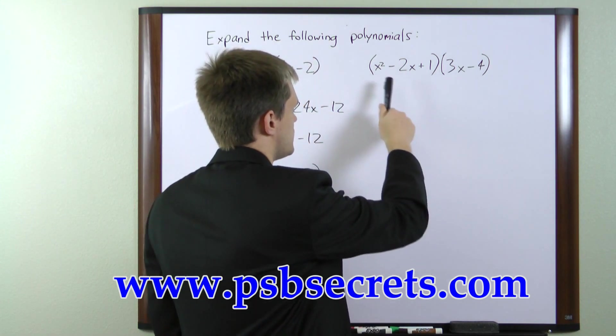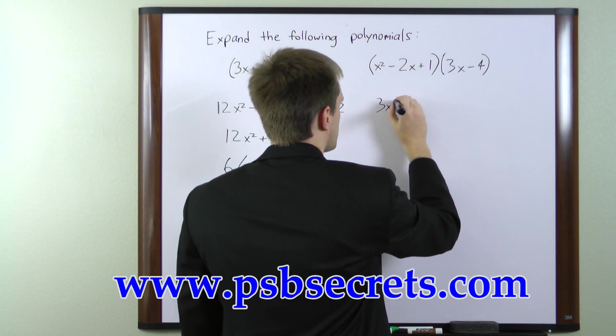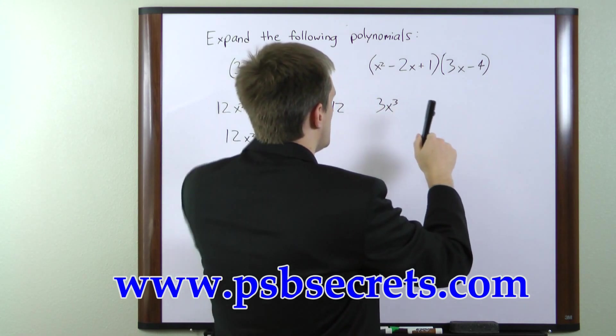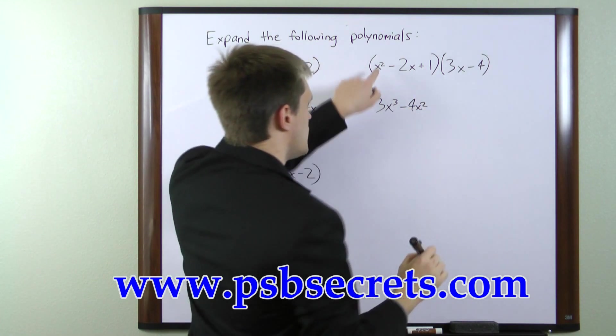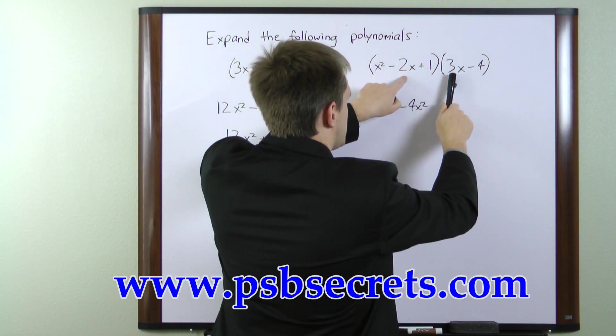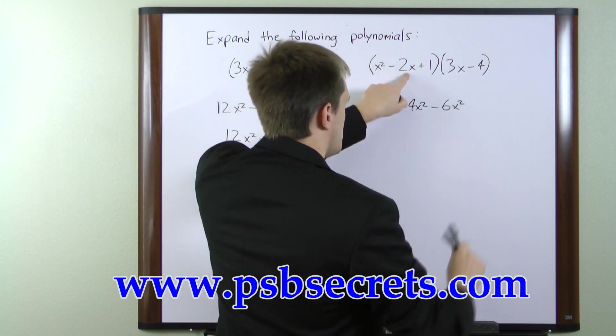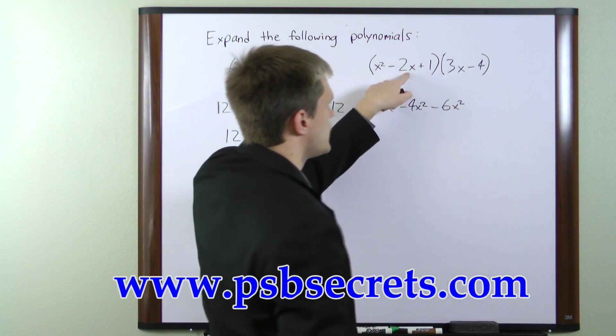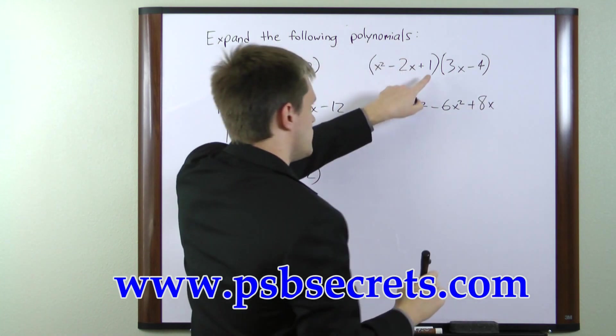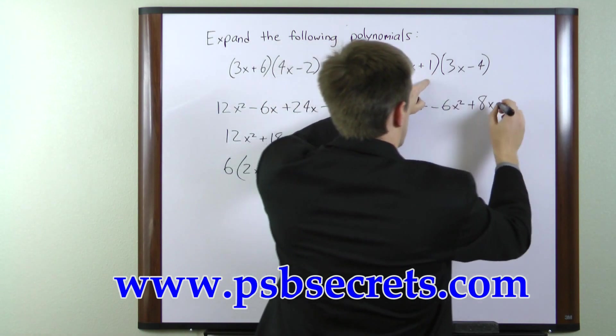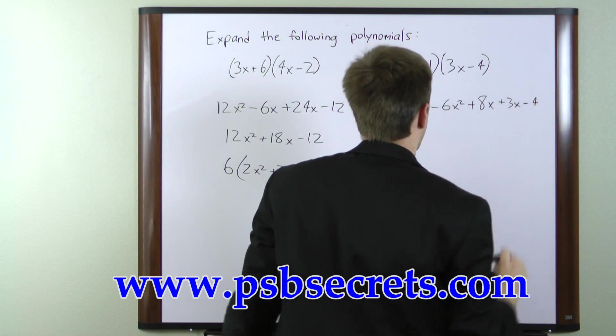So the first in order is going to be x squared times 3x, which gives us 3x cubed. x squared times negative 4 gives us negative 4x squared. Moving to the second term here, minus 2x times 3x gives us minus 6x squared. Minus 2x times minus 4 equals plus 8x. Moving on to the third term here, 1 times 3x is 3x, and 1 times negative 4 is negative 4.